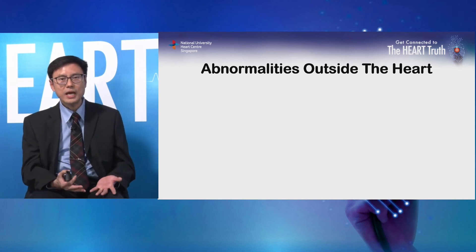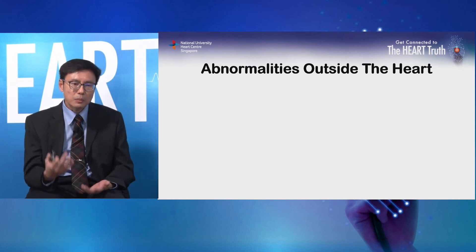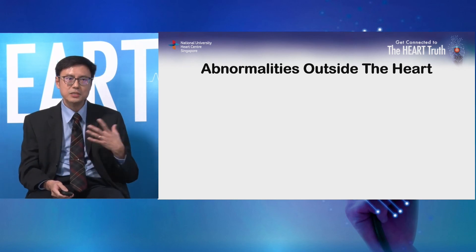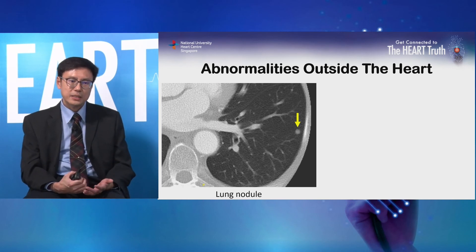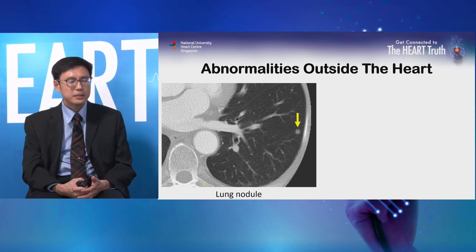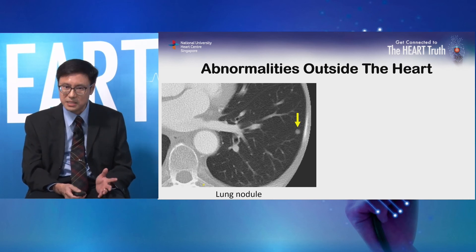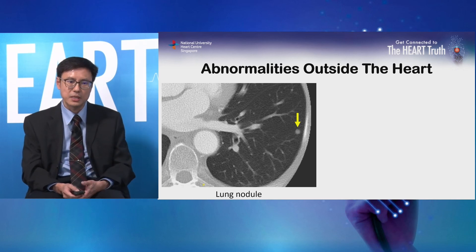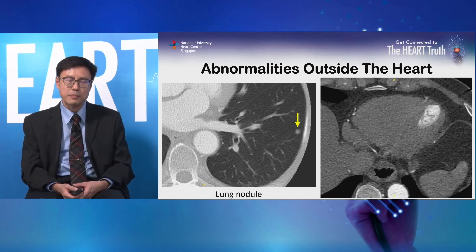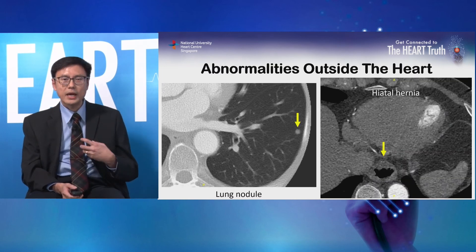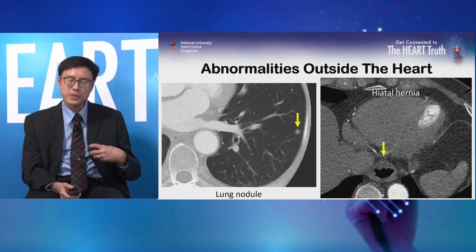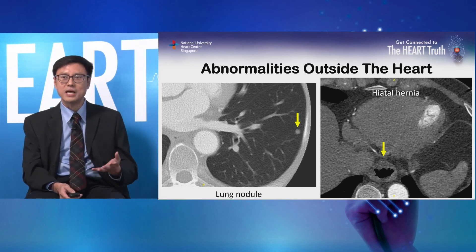The CT scan will also pick up abnormalities outside the heart, because we can see the chest, lungs, liver, and so on. Here is an example of a patient where the CT scan incidentally detected a small nodule in the lung, which could be early lung cancer — this patient needs close follow-up. Another example is a lady with part of her stomach in the chest, called a hiatal hernia. The stomach is not supposed to be in the chest, and when it is, it can cause chest pain and indigestion.